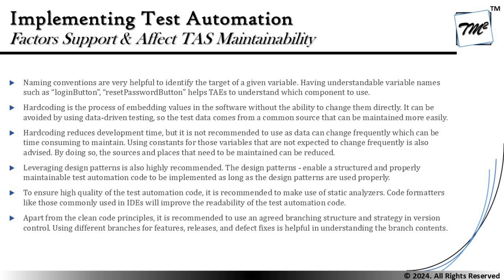Apart from clean code principles, it is also recommended to use an agreed branching structure and strategy in version control. Using different branches for features, releases, and defect fixes is helpful in understanding the branch context. The only reason we do branching is to safeguard our existing piece of work — if any new activity on a branch succeeds, we can later merge it to the main branch. Starting with a feature branch and then relating it to release branches on success is a good practice to keep code maintainable.